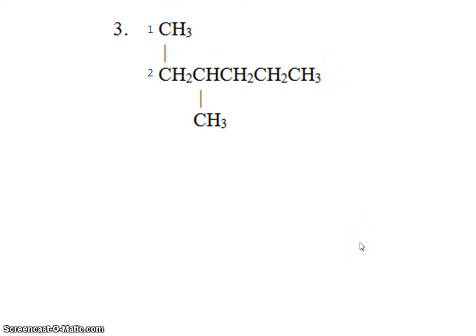Carbon 1, 2, 3, 4, 5, 6. So the parent chain here would be called hexane. And we have a methyl group located on the third carbon. So that makes it 3-methylhexane.